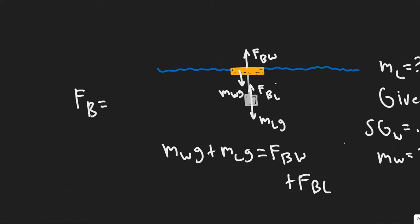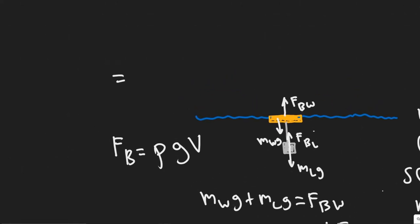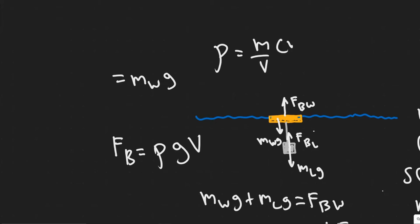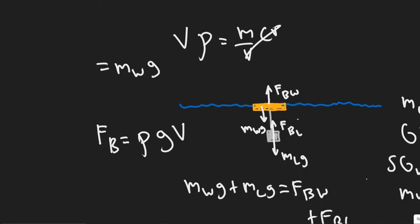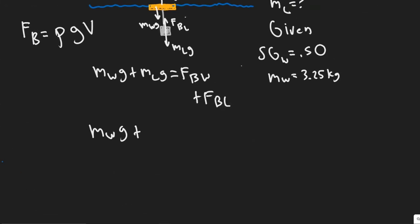We need to find the buoyancy force for both the wood and the lead. The buoyancy force is equal to the weight of the water displaced. The formula for it is rho times G times V. The way this works is it's the mass of the water times G. We know density rho equals mass over volume, so if we want mass, we multiply both sides by V. So we replace mass with rho times V, and that's how we get this. So both sides give us: M_W*G + M_L*G = rho*G*V_wood + rho*G*V_lead.